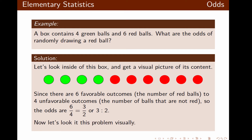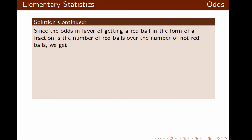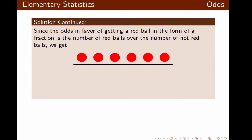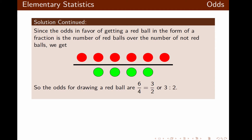Let's see this problem visually. We can write a fraction with six red balls in the numerator and four green balls in the denominator — the number of favorable outcomes in the numerator and the number of unfavorable outcomes in the denominator. Reducing this fraction, the odds for randomly drawing a red ball are 6 over 4, which reduces to 3 over 2, or 3 colon 2.